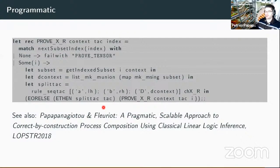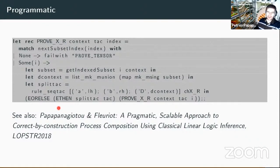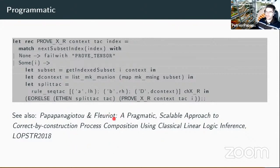The next part is programmatic use. The idea is that you can use these tactics to create proof automations. A common question is about backtracking and dealing with multiple context splits. This framework is at a lower level — backtracking implies you have another tactic to apply later and want to see which context fits. But it is possible if you use these tactics programmatically. This function iterates over all the subsets until it finds the right one where a given tactic can be applied. There's also a recent paper on process composition which has a lot of proof automation made possible thanks to this framework.